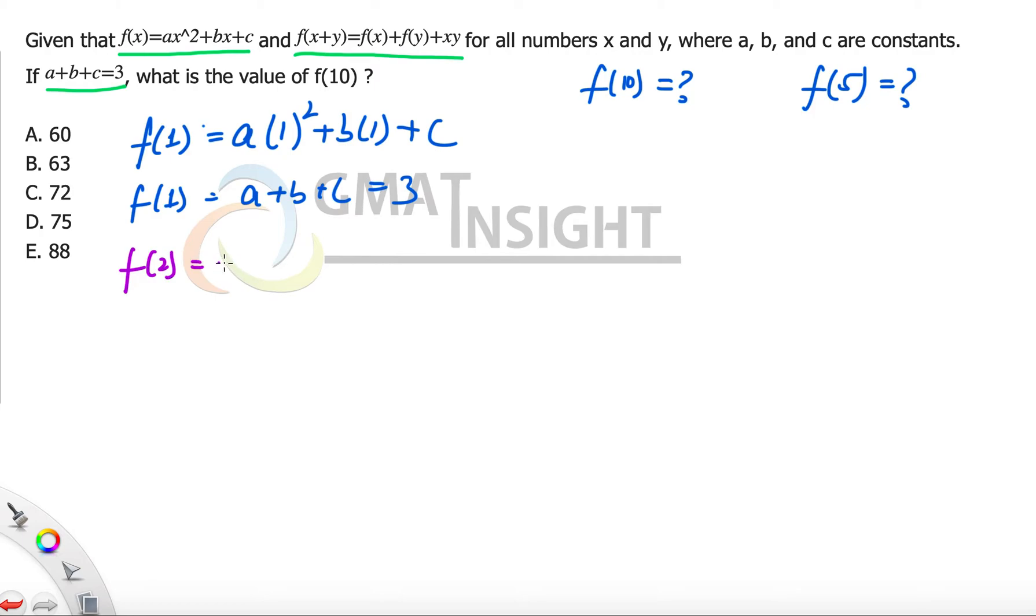f(2) can be written as f(1+1), and now we are going to use this function as the question defines. f(1+1) can be written as f(1) + f(1) + 1×1. Now f(1) value we already have that is 3. So 3 + 3 + 1×1 becomes 6 + 1, that is 7.